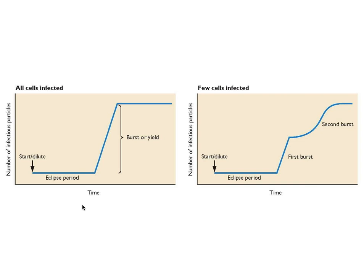Sometimes he did experiments where only a few cells in the culture were infected, and then he got the pattern shown on the right. Measuring with time the number of infectious particles, you see the eclipse period, then a burst, then a plateau, and then a second burst. That's because you have multiple cycles of infection: the initially infected cells release virus, which then infects other cells, producing a second eclipse period and burst.